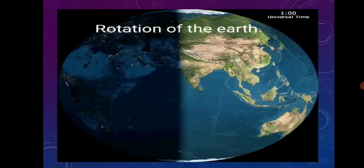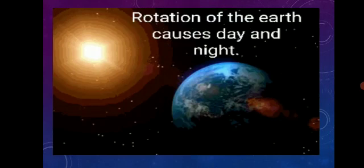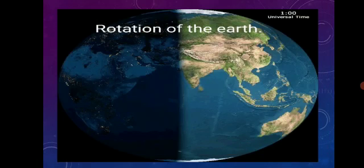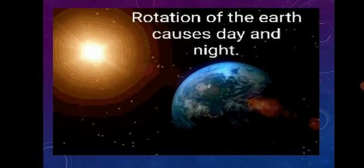Rotation of the earth causes day and night. The half part which gets light from the sun has day, and the half part which does not get the light from the sun has night. Because of the rotation of the earth, day changes into night and night changes into day.